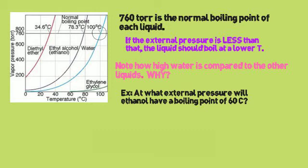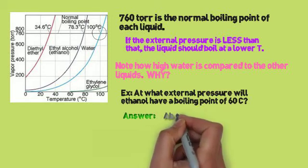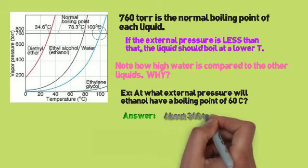So let's do an example. At what external pressure will ethanol have a boiling point of 60 degrees Celsius. You can pause. And the answer is coming up. At what external pressure will ethanol have a boiling point of 60? And the answer is about 340 torr.